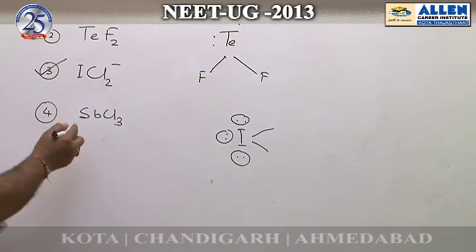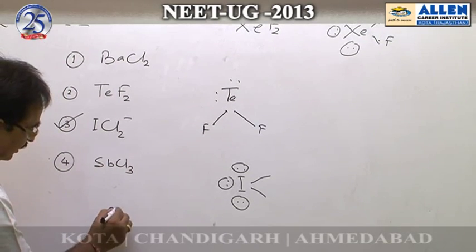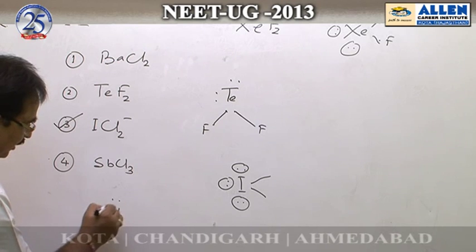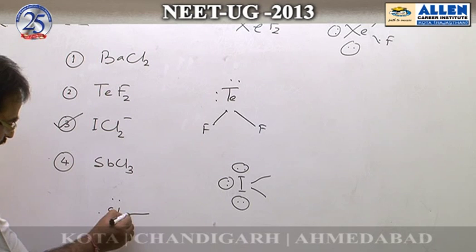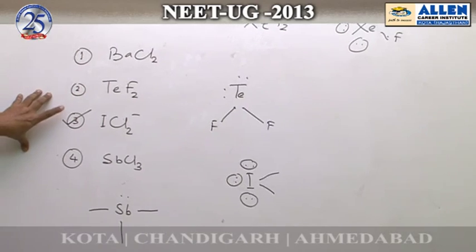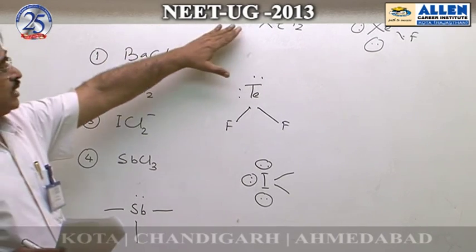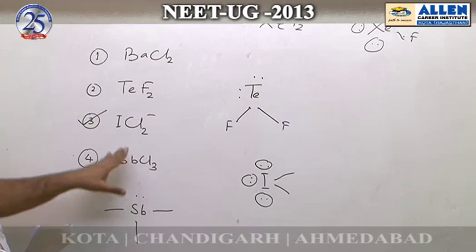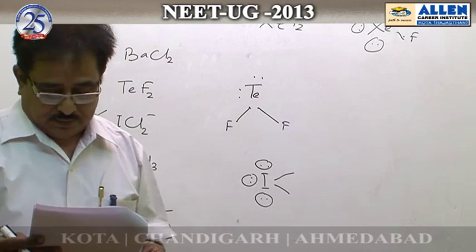For the 4th option, SbCl3 — antimony is an element of the nitrogen group, having 5 electrons in the valence shell. In this molecule, 1 lone pair and 3 bond pairs are present. So the answer is option 3: XeF2 is isostructural with ICl2⁻.